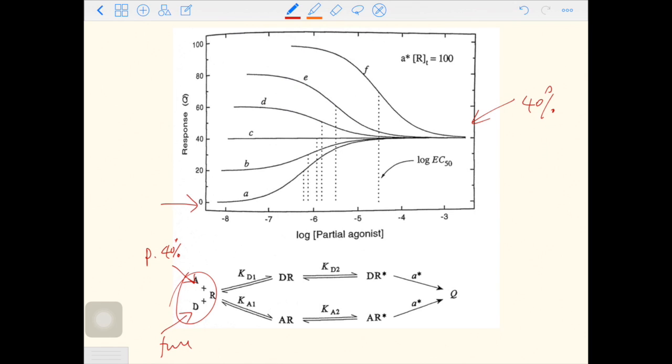For A, there is no full agonist, so there is no response at the starting point of the system. When you add more partial agonist, the response will be kept at 40%. In the case of B, you have some amount of full agonist in the beginning, so you have an initial response.